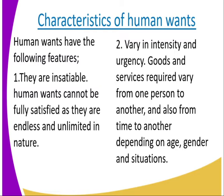Number two: they vary in intensity and urgency. Goods and services required vary from one person to another. Some wants are urgent, some are intense, and some are not urgent. For example, one person might consider getting a car as urgent, while for another person getting food is urgent. They keep varying depending on age, gender, and situations.